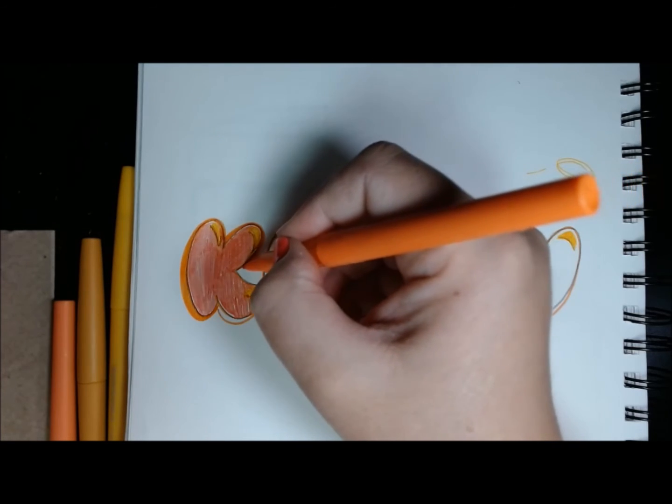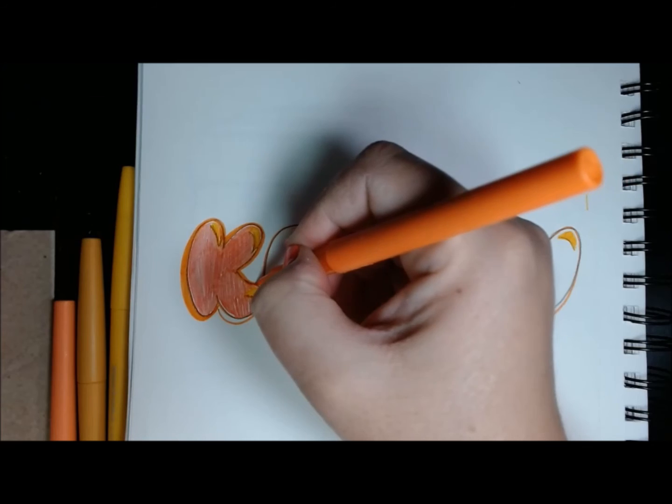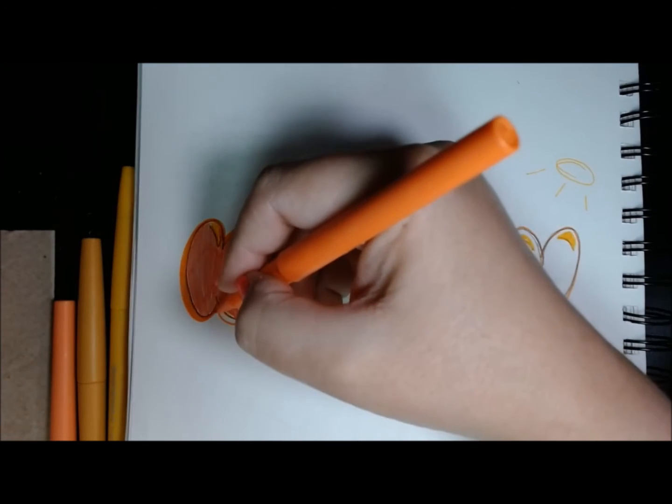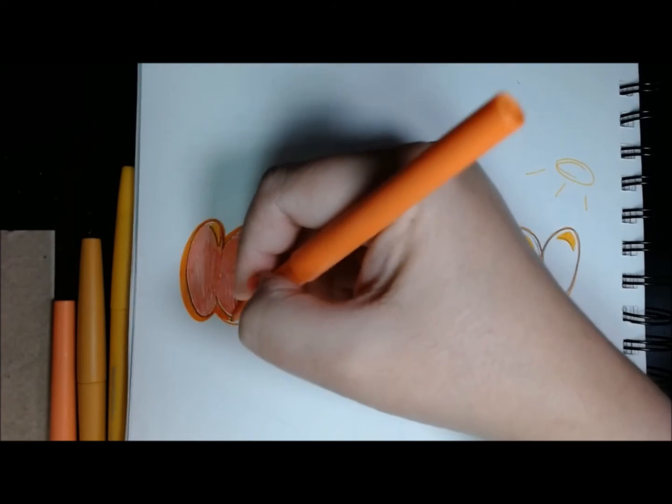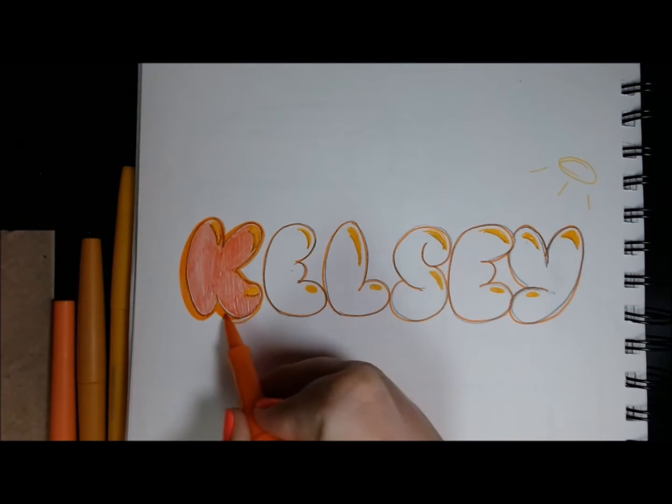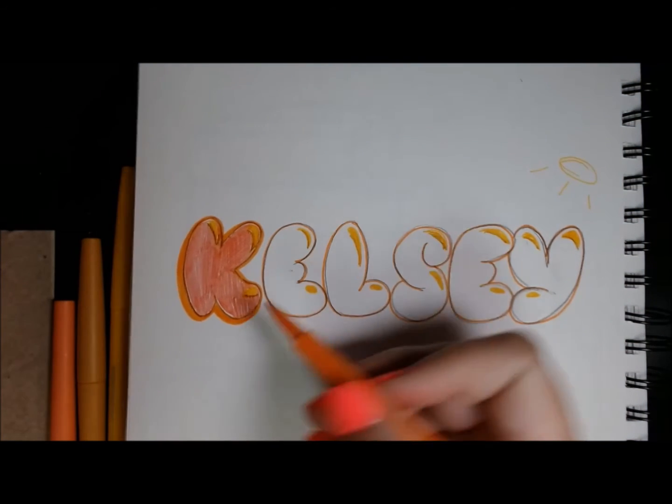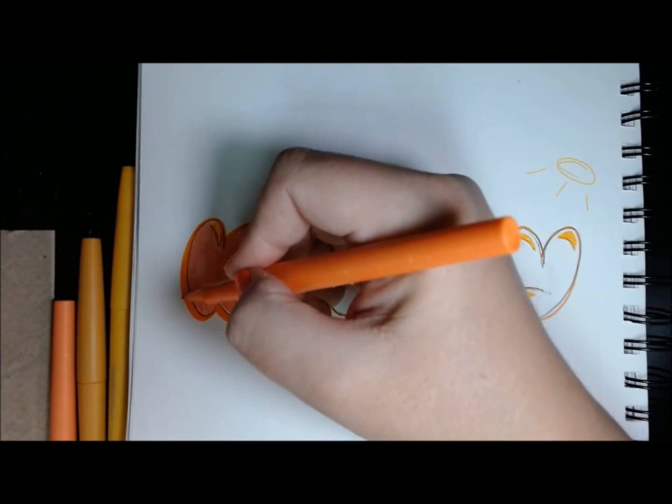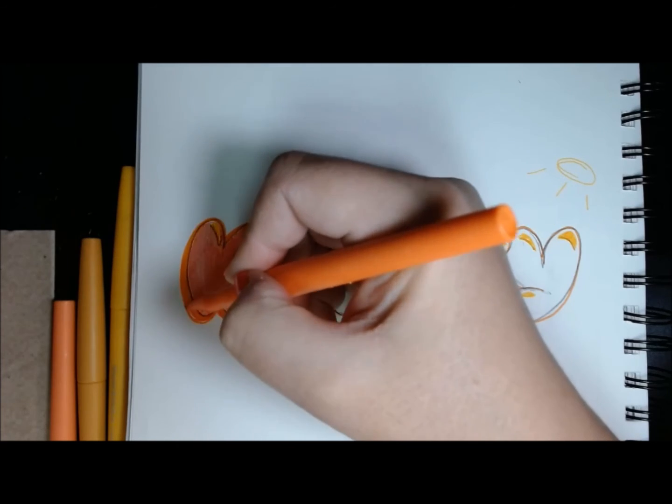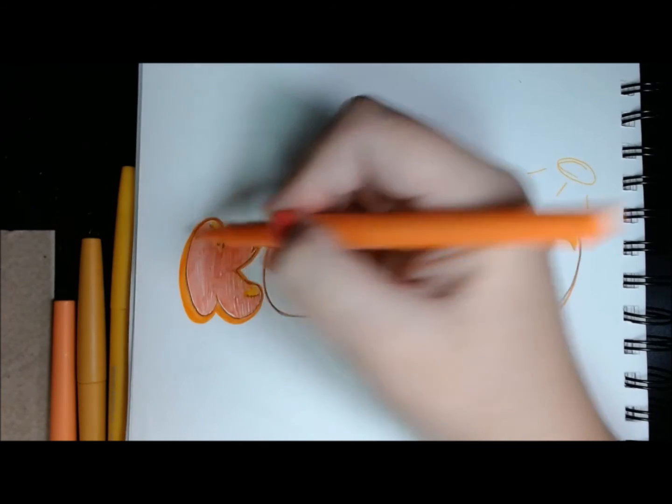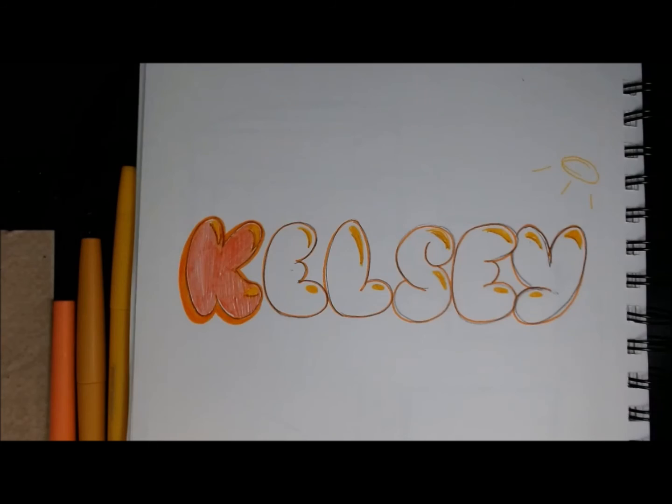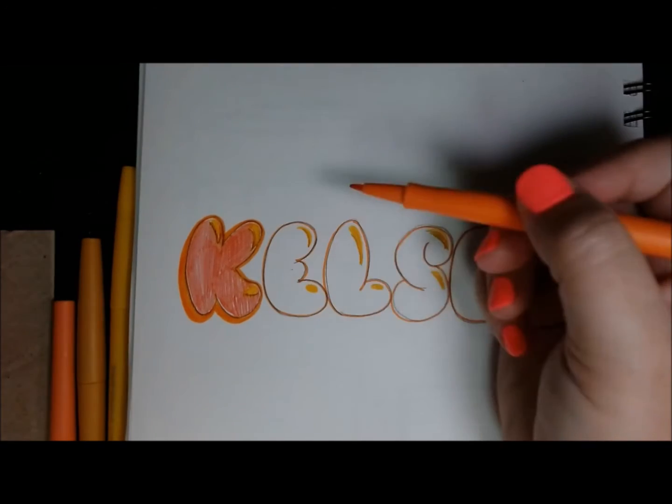Now I'm going to thicken my outline on the side closest to the light just because it looks a little bit better. I want to see my outline. I don't want it to be invisible, but I have to make sure that my shadow is just large enough that it's thicker than the side on the light. So again, now that I'm going to my E, I'm going to start with the shadow.